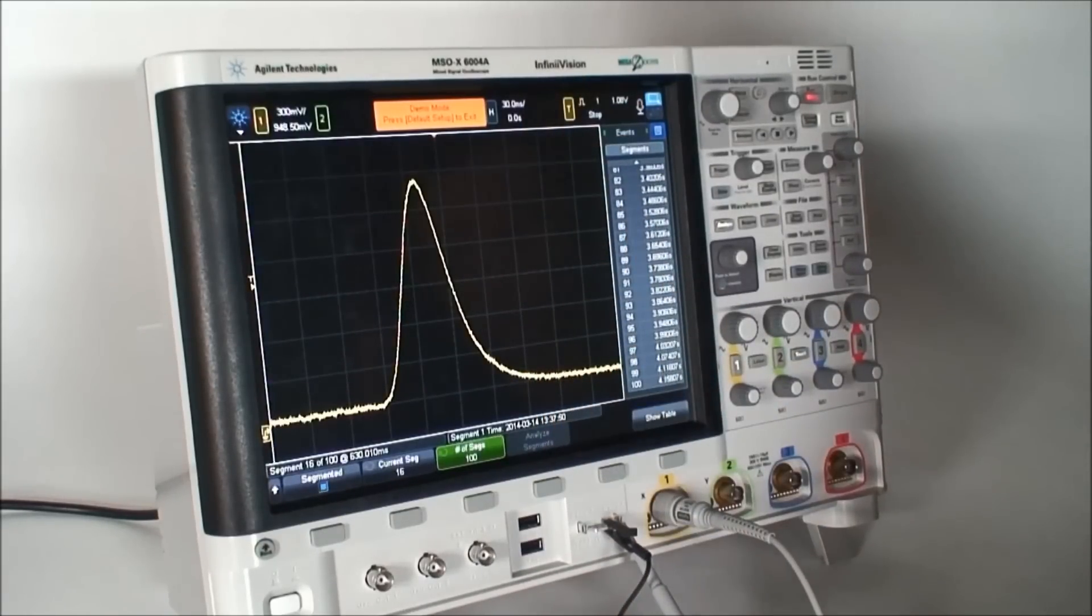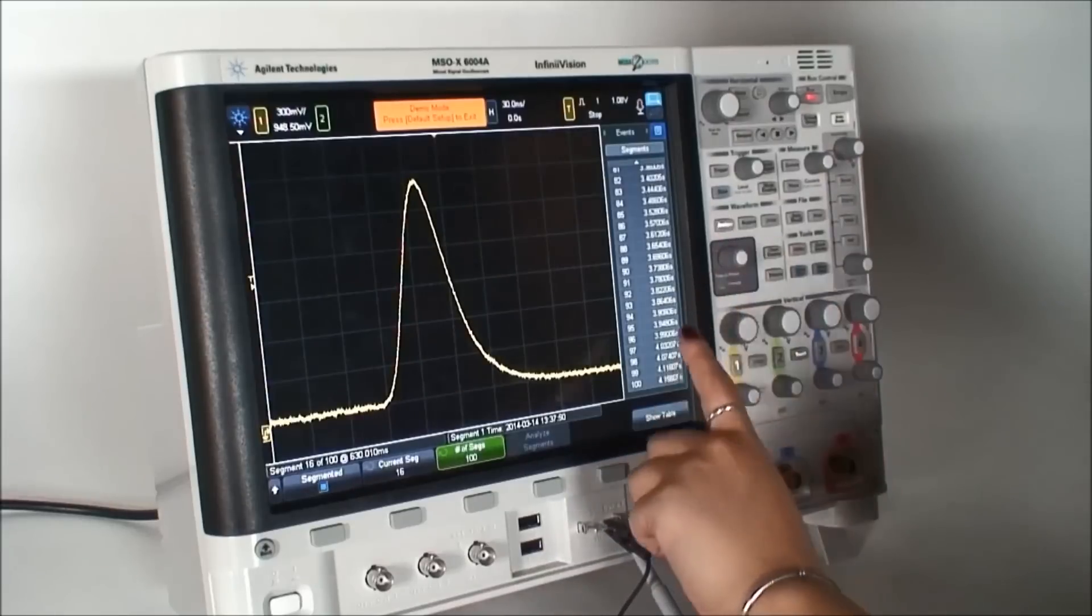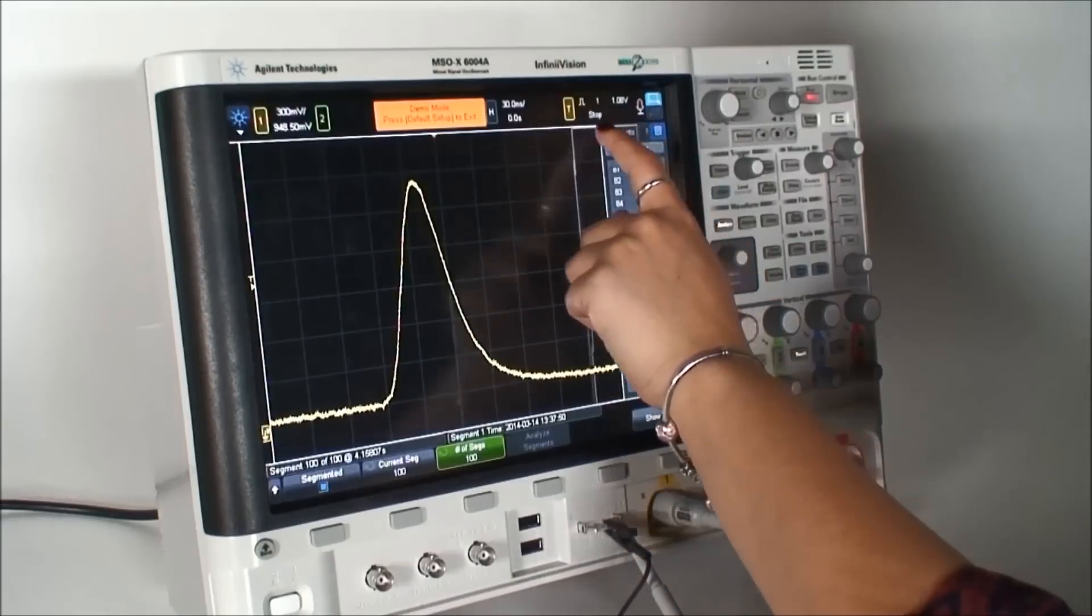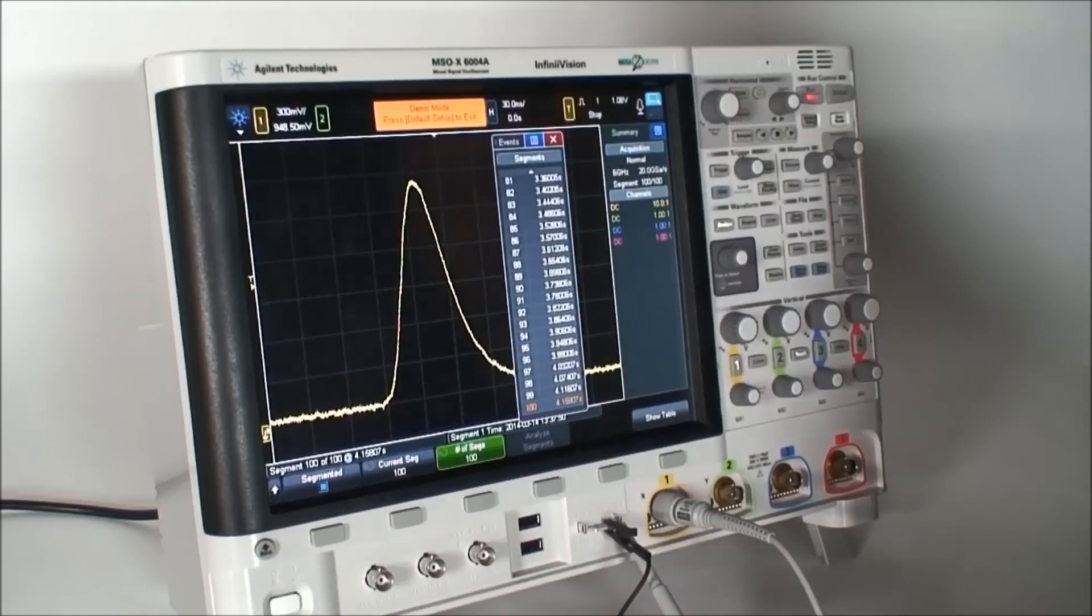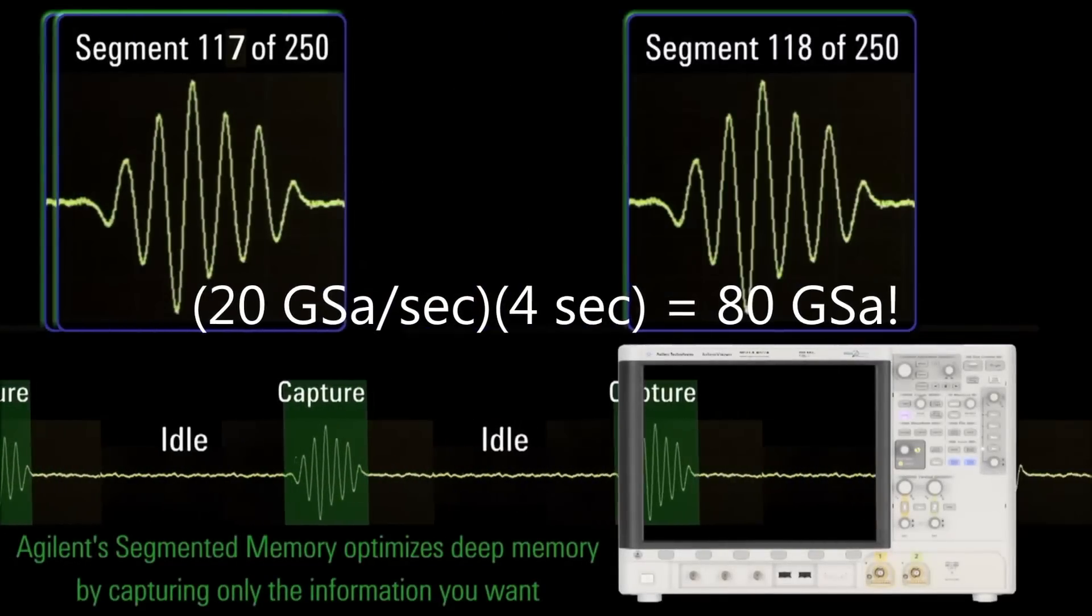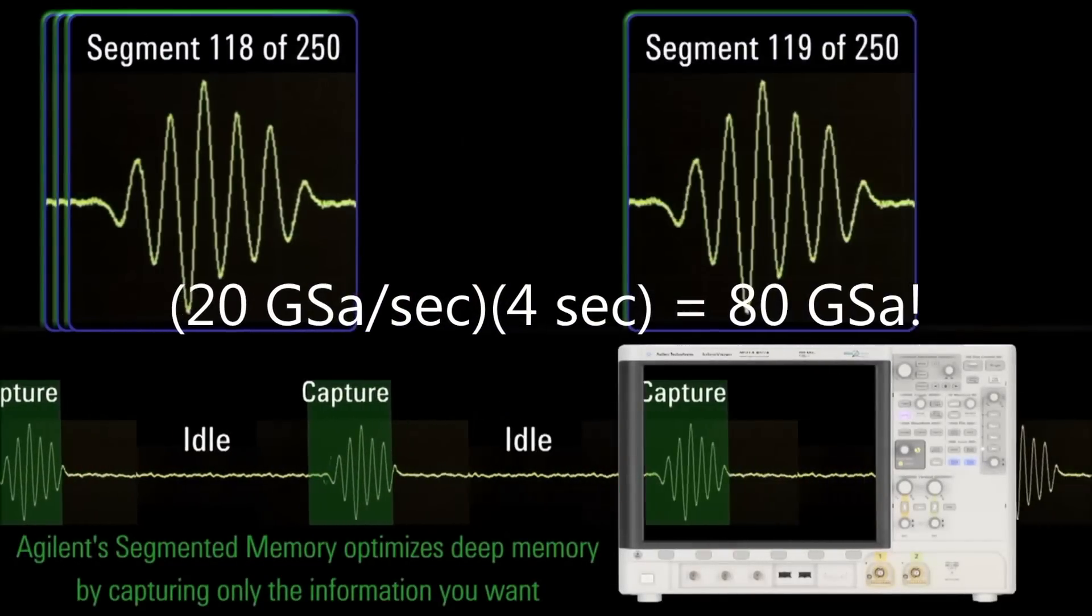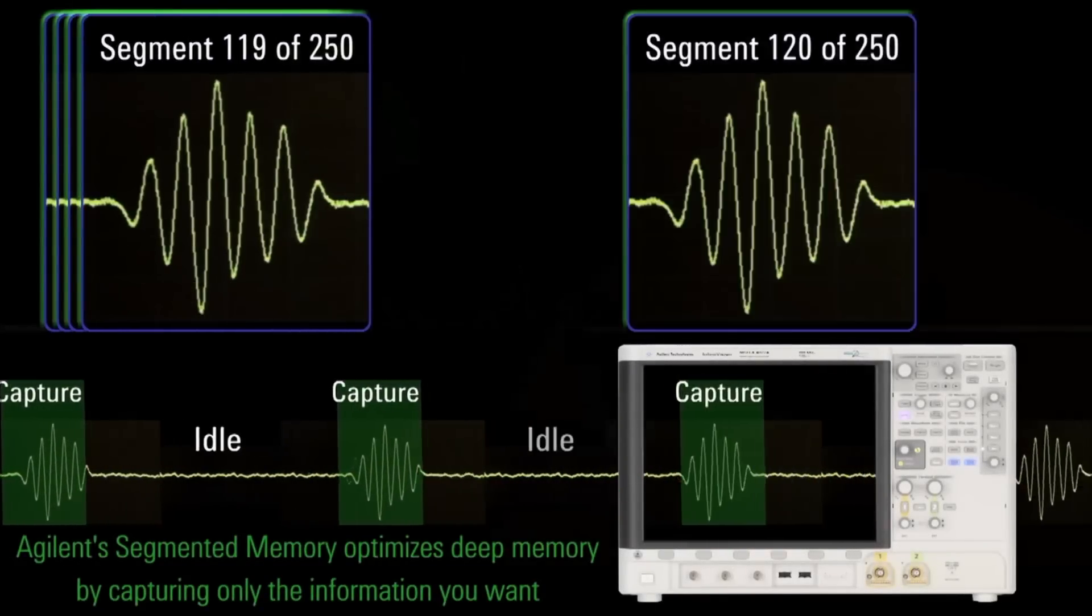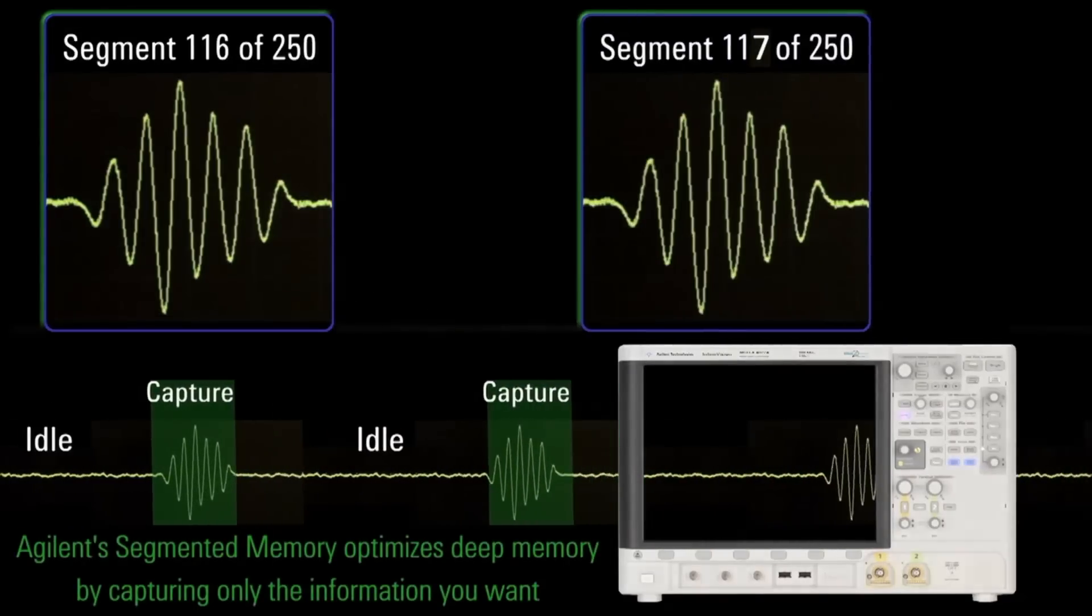If we scroll down to the last captured glitch, we can see that it took the scope about 4 seconds to capture 100 glitches, at a sample rate of 20 Giga samples per second. Without segmented memory, this would require a scope of 80 Giga points of memory to capture and digitize all of these glitches. No scope on the planet has this amount of memory.